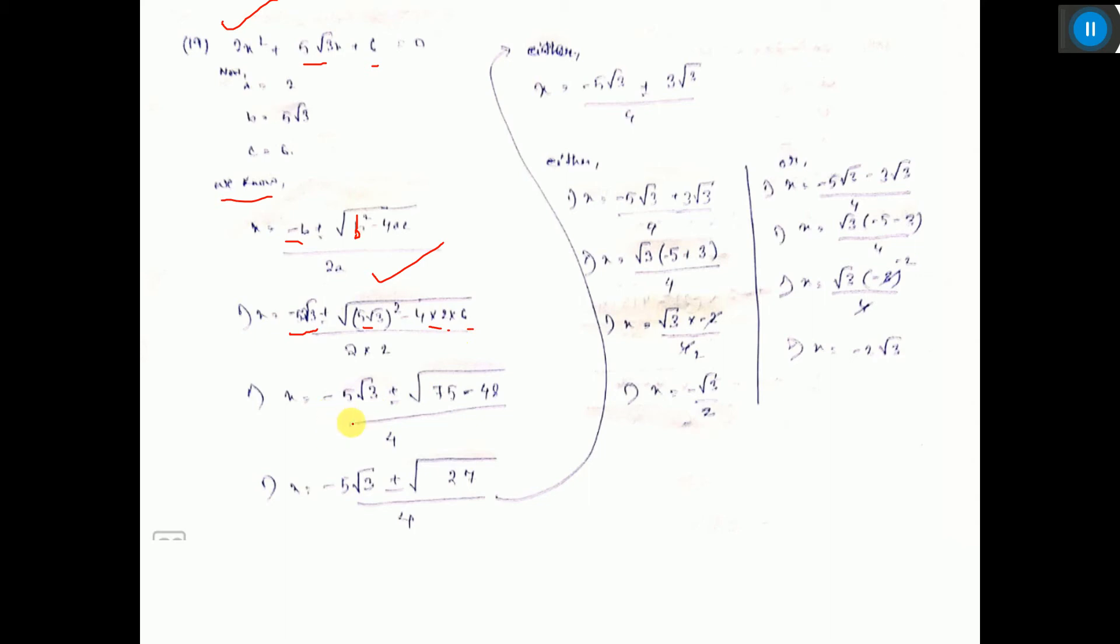So you are getting minus 5 root 3 plus minus root of 5 squared times 3, that is 75 minus 48. So it is coming 27, 27 means 3 root 3.